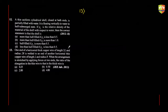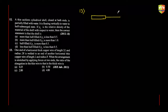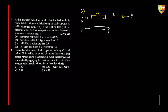One end of a horizontal thick copper wire of length 2L and radius 2R is welded to an end of another horizontal thin copper wire of length L and radius R. When the arrangement is stretched by applying forces at the two ends, the ratio of elongation in the thin wire to that of the thick wire is asked. Both wires experience the same force F.